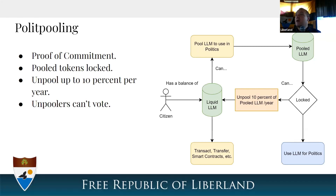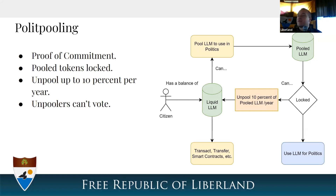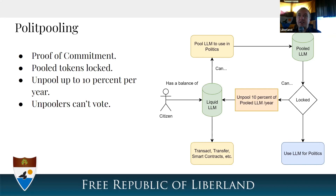If you want to sell your pooled tokens, there is a slow schedule of 10% per year, payable monthly — so one-twelfth of 10% per month — transferring LLM from your political wallet to your liquid wallet. There is no custodial solution anywhere in the system. We're not a custodial party, and we'll likely list first on a DEX rather than a centralized exchange. It's like moving from one pocket to another, but that pocket is slowly releasing contents.